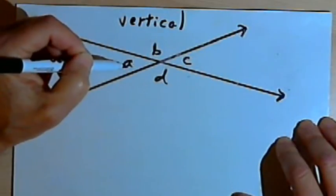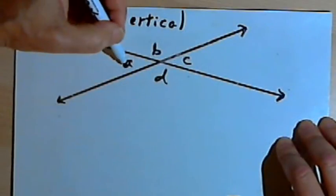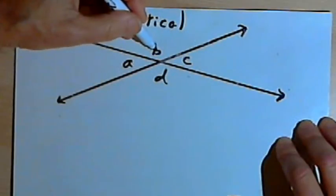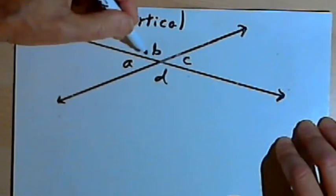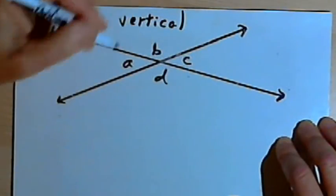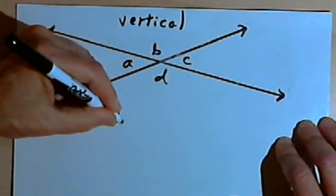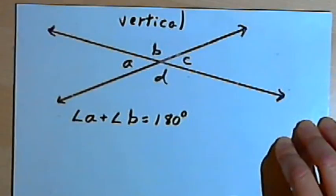What I want to do is prove that angle A equals angle C. So here's how I'm going to do it. Angle A and angle B are adjacent angles, and they both lie along the same line, so they're supplementary angles. We know that supplementary angles add up to 180 degrees. So angle A plus angle B equal 180 degrees.